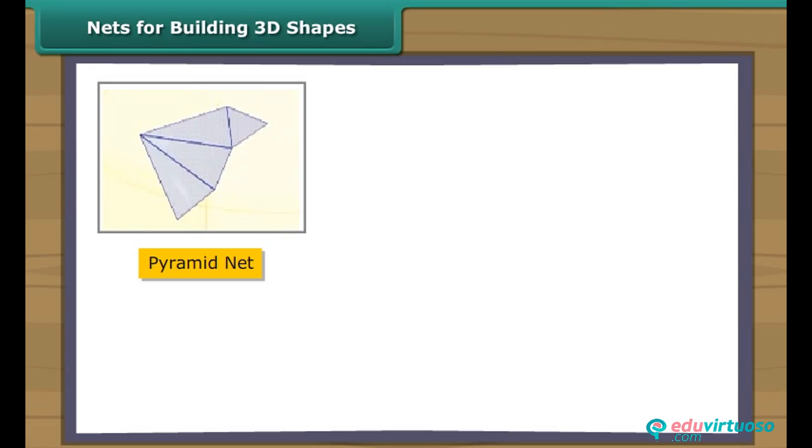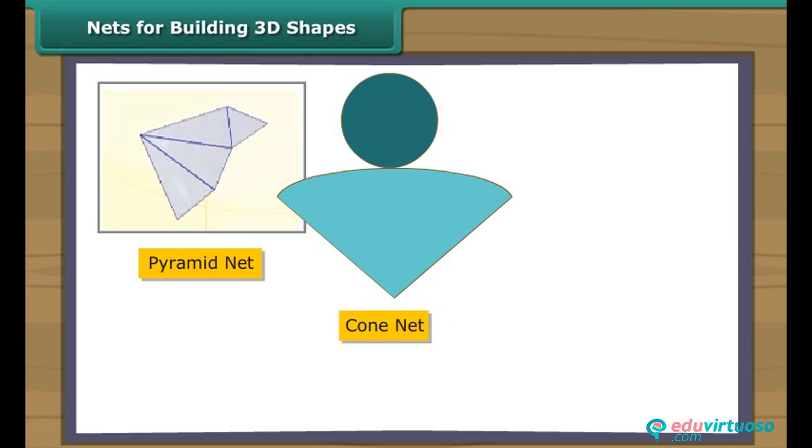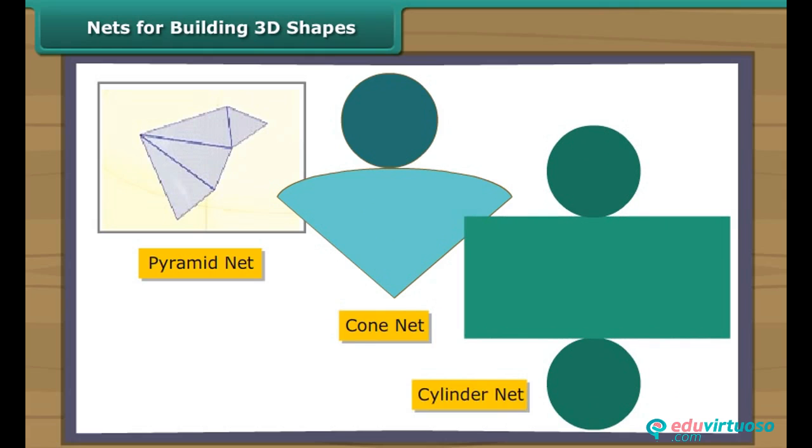Now we see how a cone is formed. Here we show you how a cone is formed from its net. Now we see how a cylinder is formed. Here we show you how a cylinder is formed from its net.